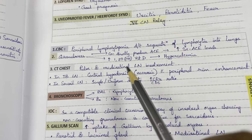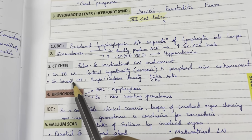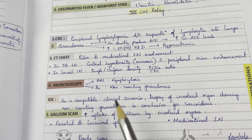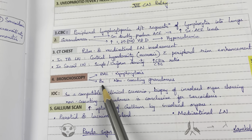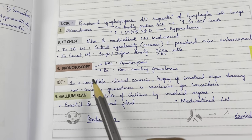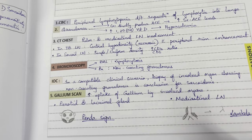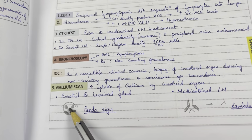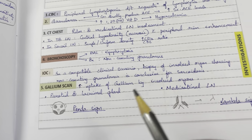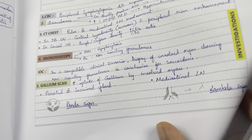Bronchoscopy BAL in sarcoidosis shows lymphocytosis and non-caseating granulomas on biopsy — investigation of choice is biopsy of the affected organ. Gallium scan: panda sign (involvement of eyes and parotid) and lambda sign (involvement of mediastinal lymph nodes).